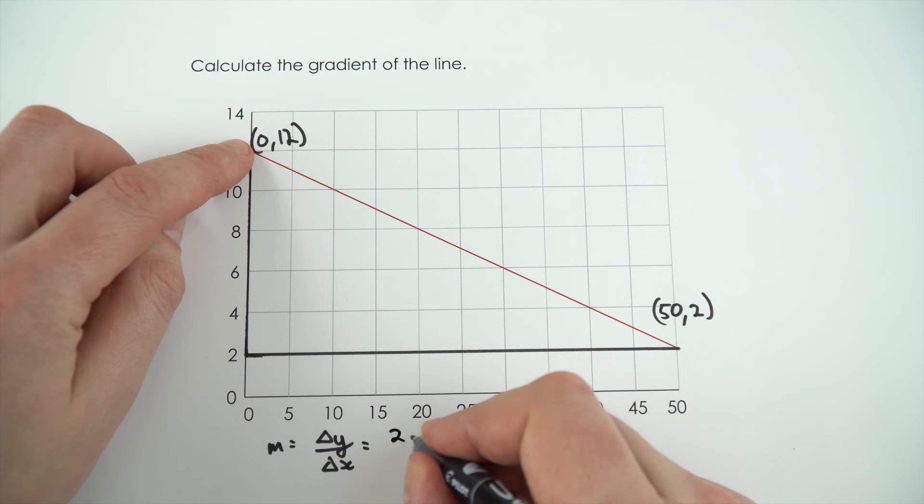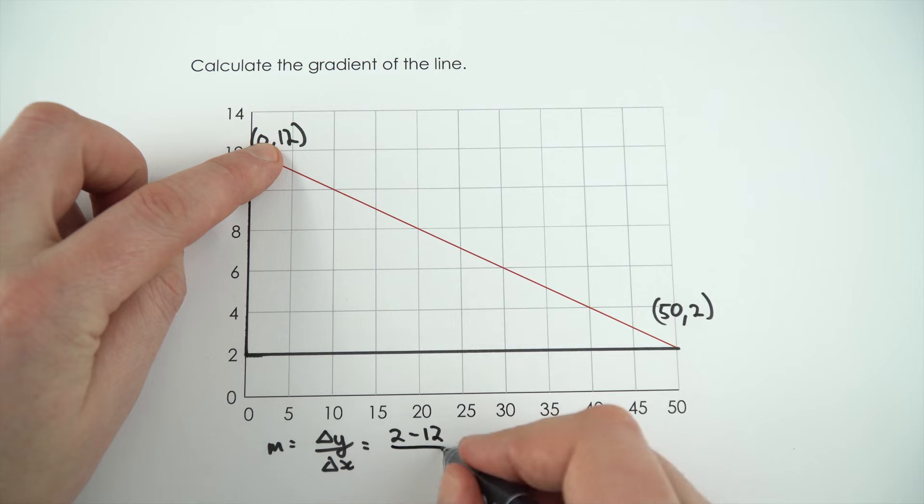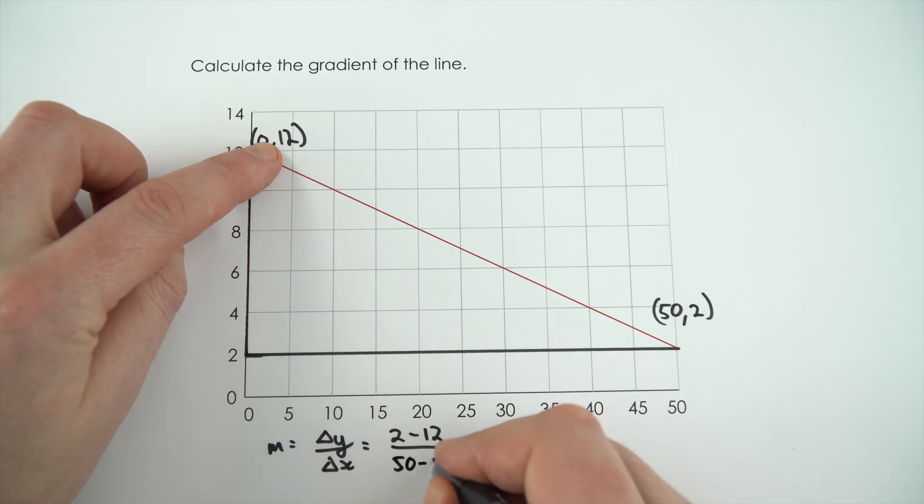So that's the same as 2 minus 12, because it ends at 2 and starts at 12, and on the x axis it ends at 50 and starts at 0, so that's equal to 50 minus 0.